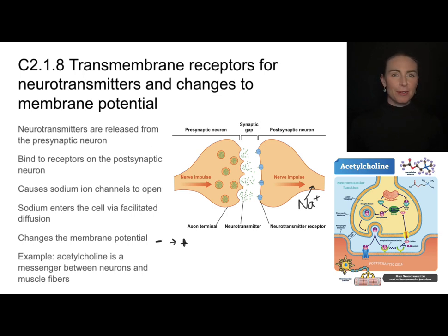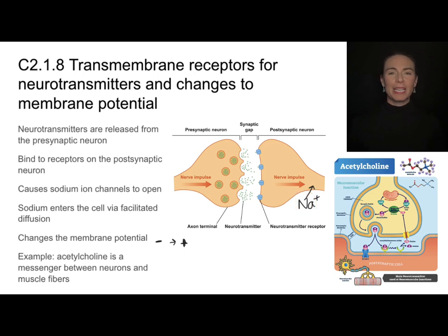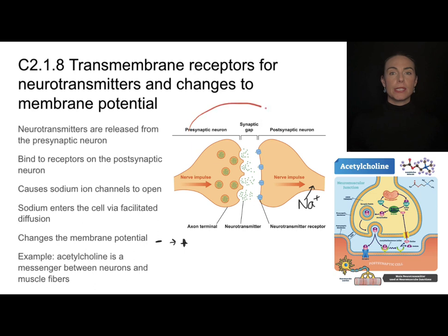What does that have to do with neurotransmitters? Neurotransmitters are released by the presynaptic neuron. They travel through the synapse—that gap between neurons—and bind to receptors on the postsynaptic neuron. This causes sodium ion channels to open, sodium ions enter the cell, it changes the membrane potential, and that's how nerve impulses are passed from one nerve to another. We can also think about this in terms of nerve impulses passed between nerves and muscles.